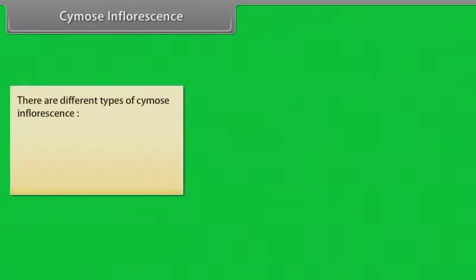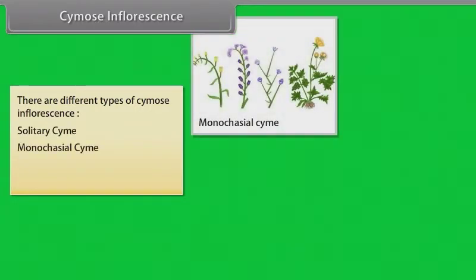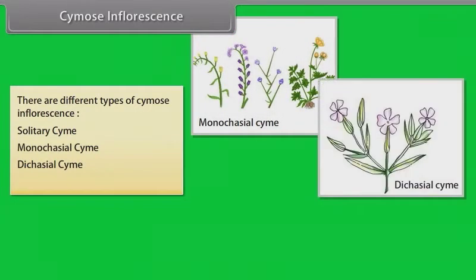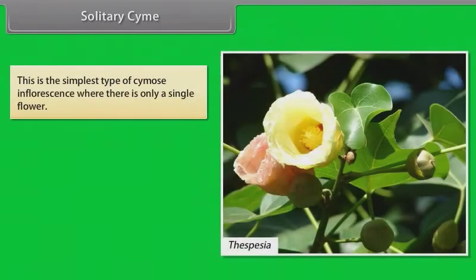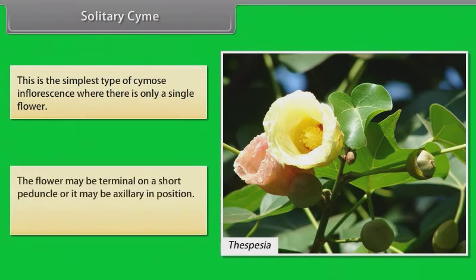There are different types of cymose inflorescence: solitary cyme, monocasial cyme, dicasial cyme, and polycasial cyme. The solitary cyme is the simplest type of cymose inflorescence where there is only one single flower. The flower may be terminal on a short peduncle or it may be axillary in position. Example: Thespesia.